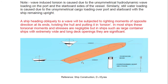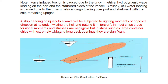When a ship heads obliquely to a wave, it is subjected to a righting moment of opposite direction — acting one way on one side and the opposite way on the other, as shown in the diagram. This oblique alignment results in twisting the hull and putting it in torsion. In most ships, these torsional moments and stresses are negligible.